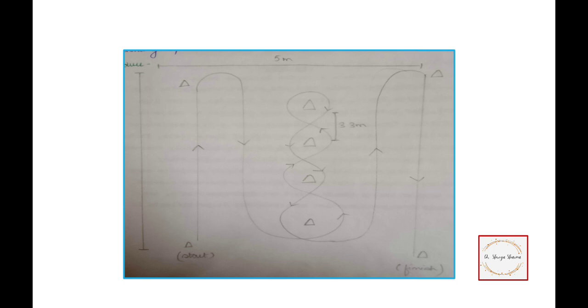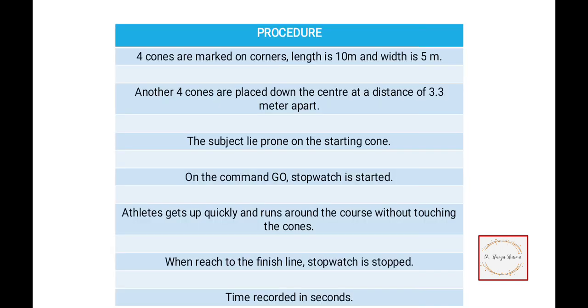The athlete will be in the prone lying position at the start. On the command go, he will get up, go in front of the cone, then come back. Then weave through the four cones, go to the upward cone, then come back to the finish line. You simply record the time.